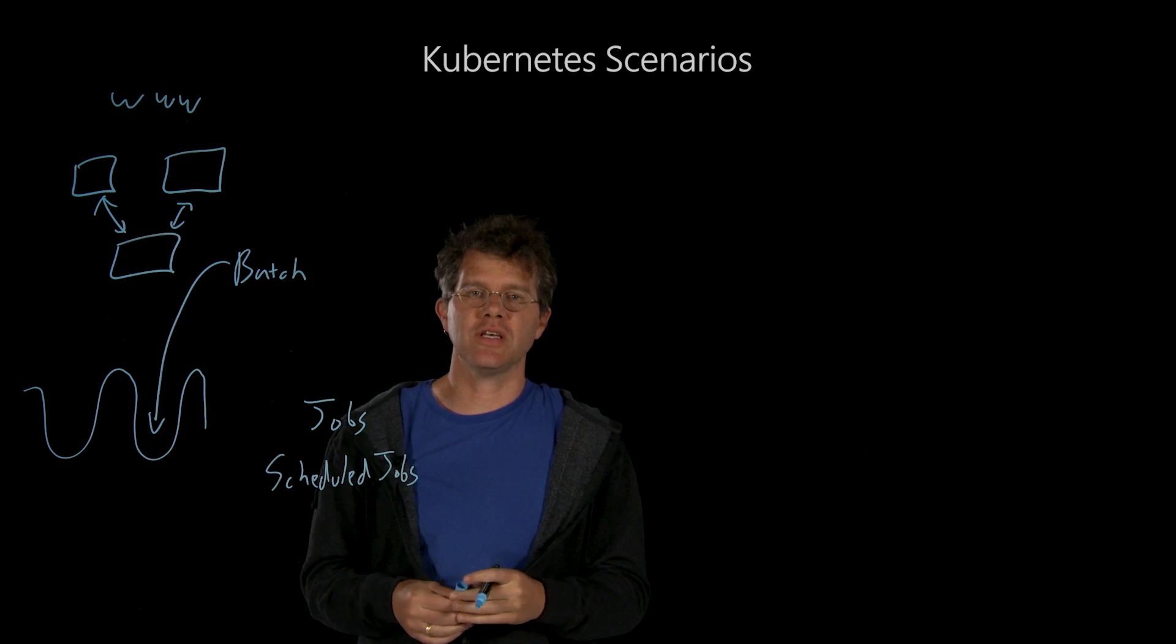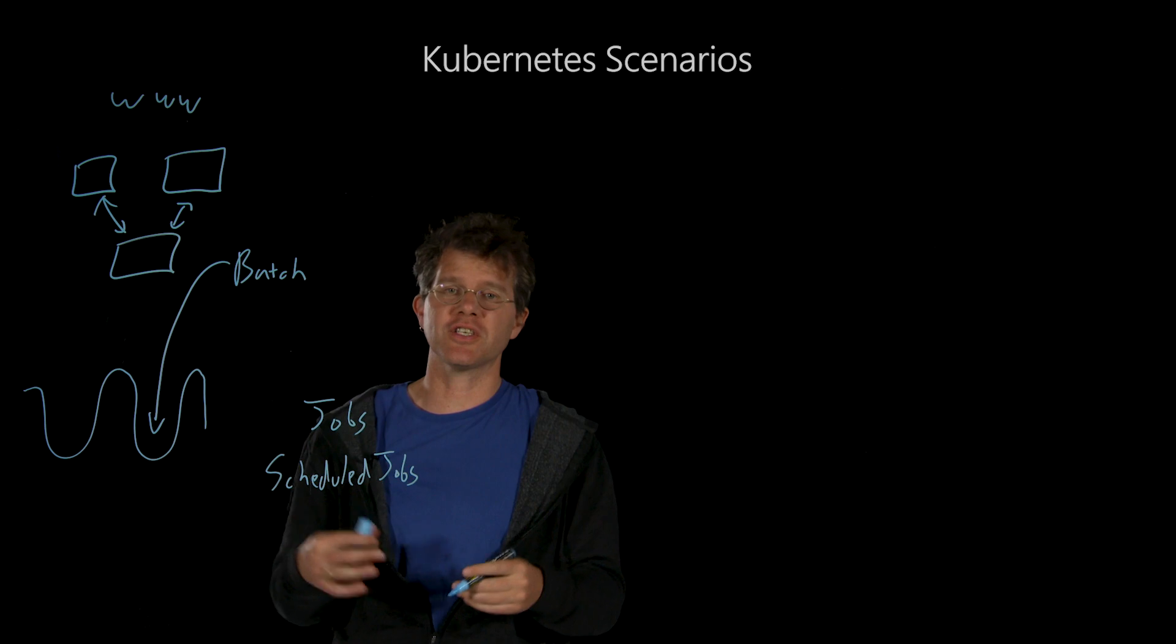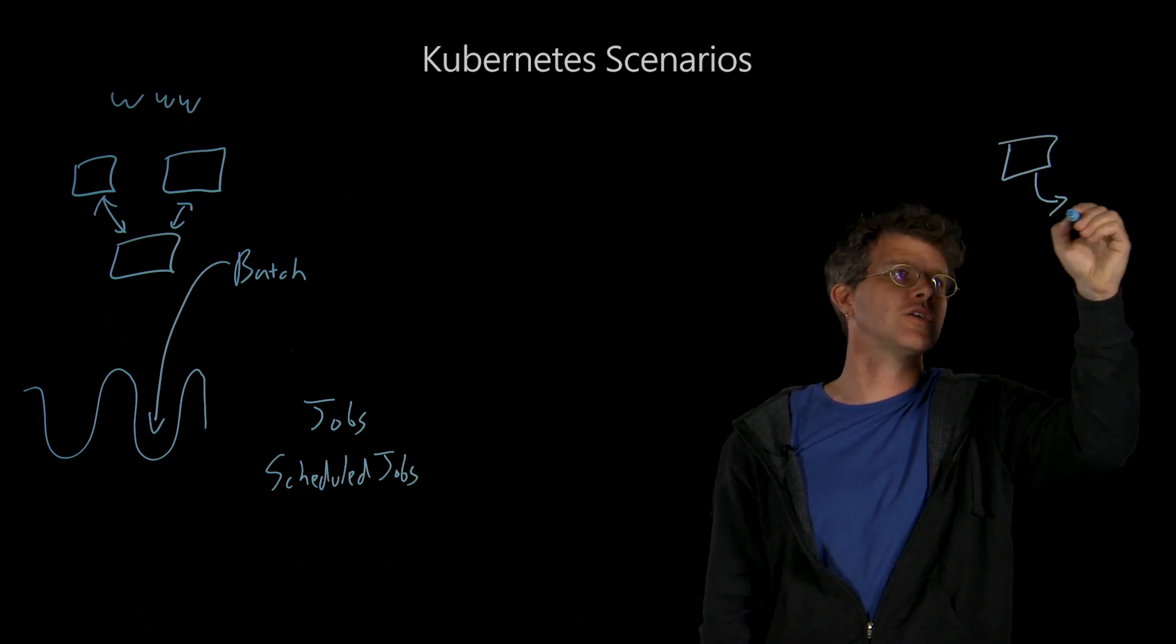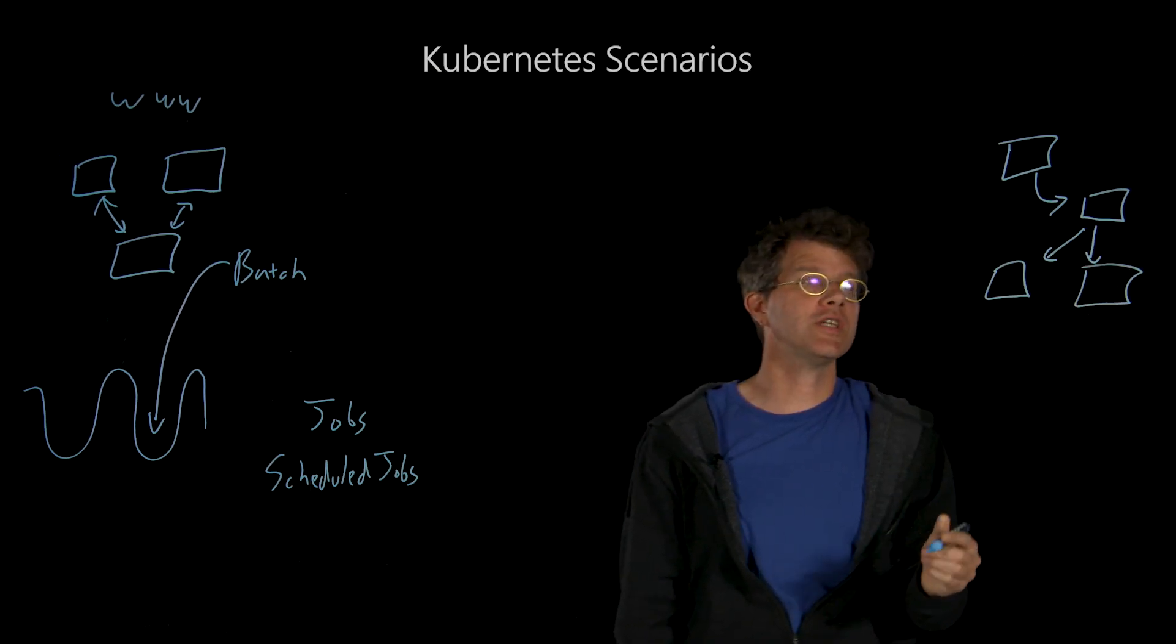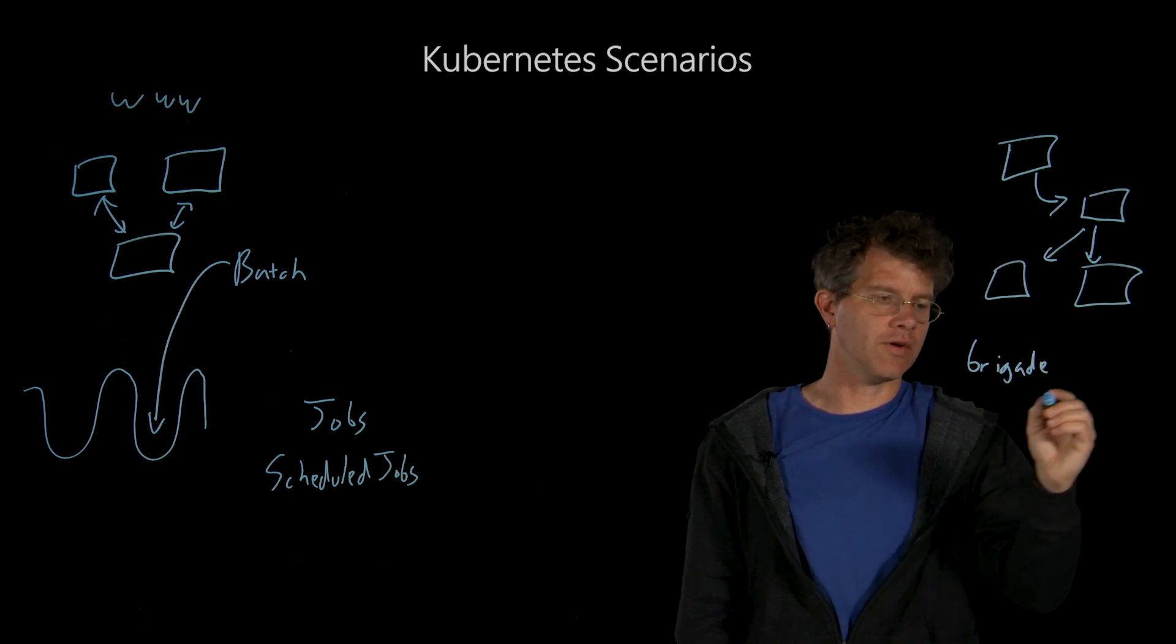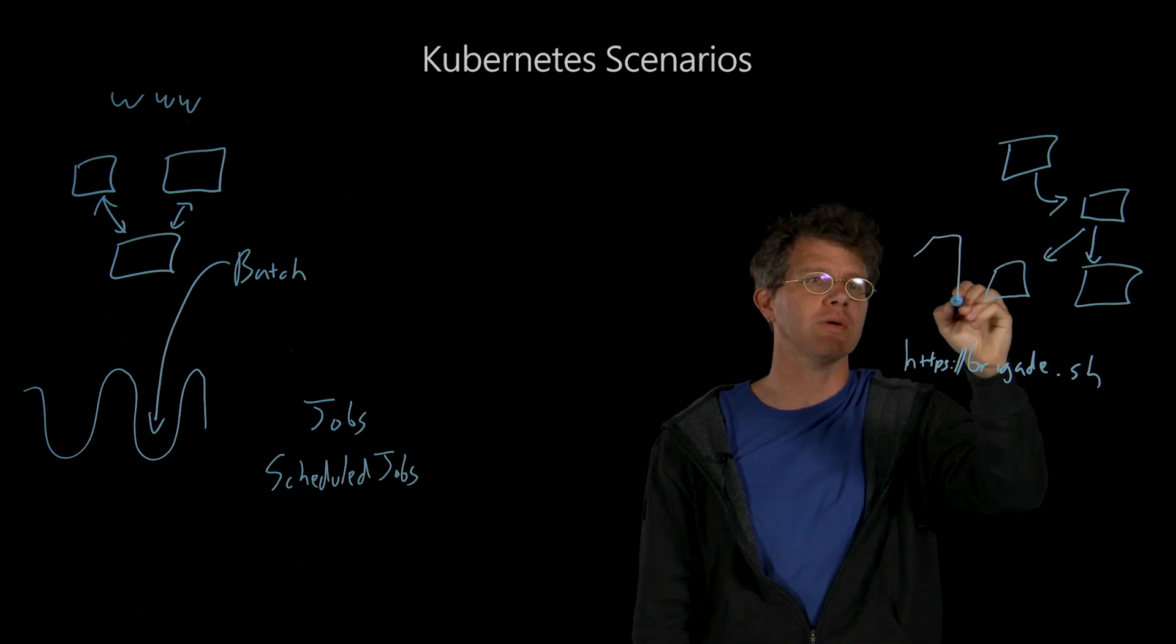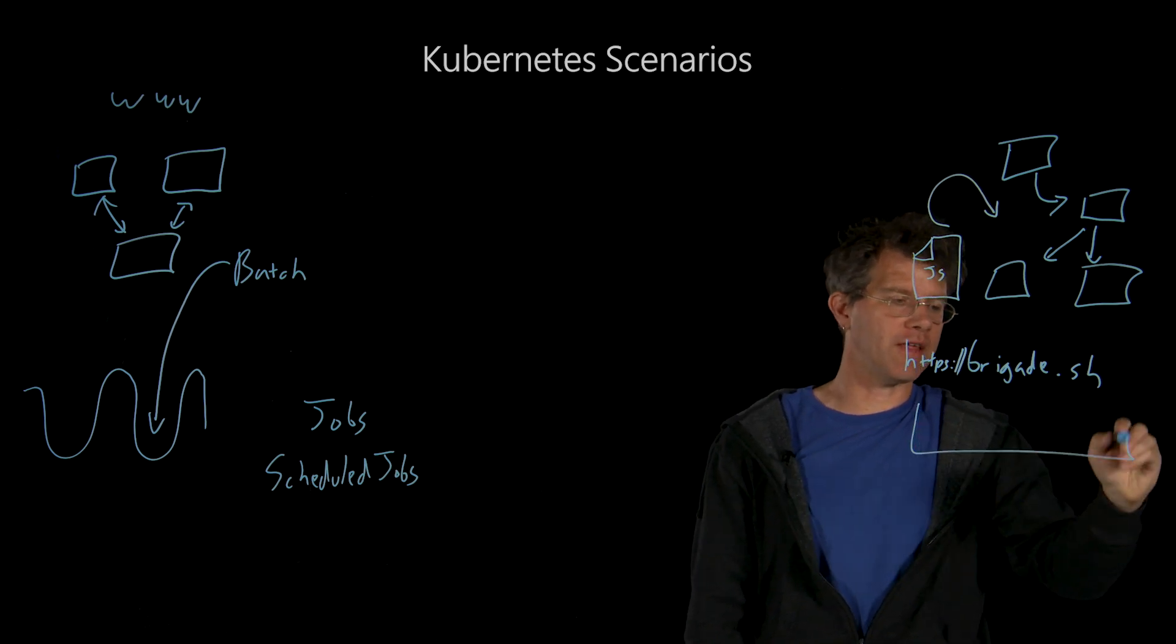In addition to that, we're actually seeing the orchestration capabilities of Kubernetes being taken advantage of to deliver something like workflow. So in workflow, you might run this job first, and then it triggers this job, followed by these two jobs. And we're seeing applications like Brigade, which you can find at brigade.sh, rising up to give you easy orchestration so you can write a JavaScript program that defines this workflow on top of that Kubernetes cluster.